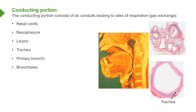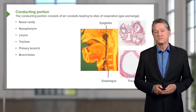You can actually feel the trachea in your neck — you can feel the tracheal cartilages. You have about 16 to 20 of those cartilages. That is a very important airway going into the lungs, and it is protected by a structure called the epiglottis. The epiglottis sits just above the larynx and right next to the entry into the esophagus.